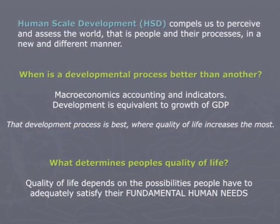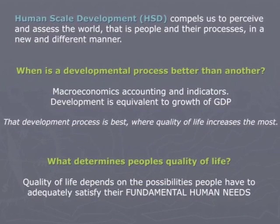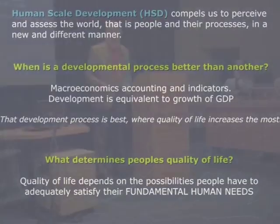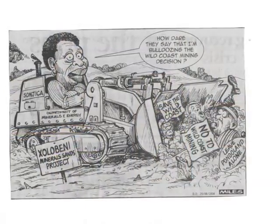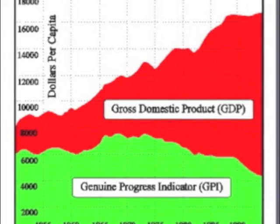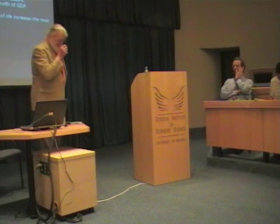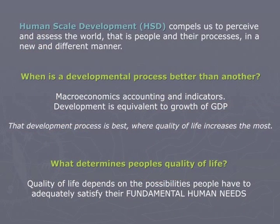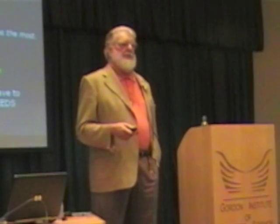Through human-scale development, we see and perceive things in a different manner. If we ask: when is a development process better? We say that development is about people and not about objects. In essence, GDP is about objects — what happens in market exchanges. We say that a development process is best where the quality of life of the people improves the most. The obvious question is: what determines people's quality of life? Quality of life depends on the possibilities you have or have not to adequately satisfy your fundamental human needs.